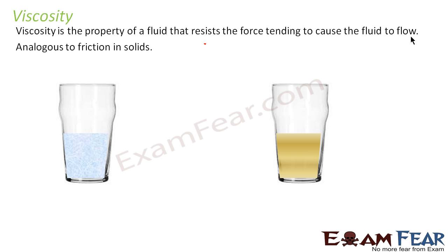If you take water placed in a glass and in another glass you take some honey, then try to pour down both. You will observe a difference: water falls down very rapidly, whereas honey falls very gradually and does not fall as rapidly as water. That is because honey is more viscous compared to water. Therefore, in order to make honey move, you need to apply a greater amount of force, because honey has an inherent property of resisting motion.